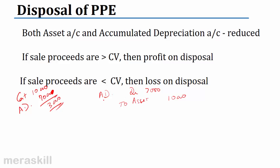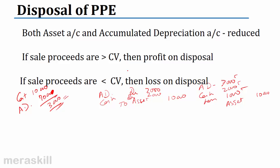Suppose you sell and get $2,000. Cash comes in, so debit $2,000. But the carrying value was $3,000, so there is a loss. The journal entry is: debit accumulated depreciation $7,000, debit cash $2,000, debit loss on disposal $1,000, and credit asset $10,000. Carrying value was $3,000 but you received only $2,000, so $1,000 is the loss. If you get more than the carrying value, you make a gain on disposal taken to the income statement. If sale proceeds are greater than carrying value, there is profit; if lower, there is a loss on disposal.